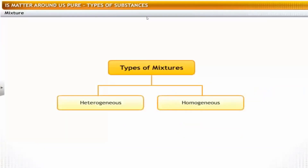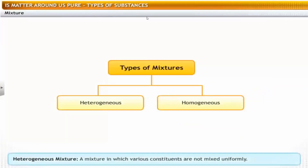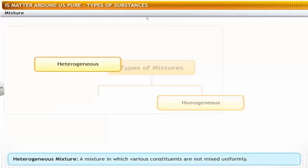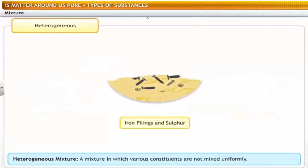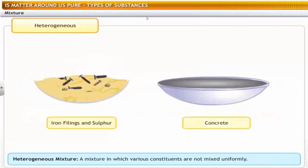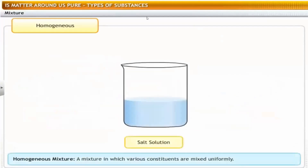Based on the distribution of particles in a mixture, there are two types: heterogeneous and homogeneous. A mixture that is not uniform throughout is called a heterogeneous mixture. For example, a mixture of sugar and salt is heterogeneous because the sugar and salt particles can be segregated based on their color and size. Other examples include iron filings and sulfur powder, and concrete which is a mixture of cement, water, sand, etc.